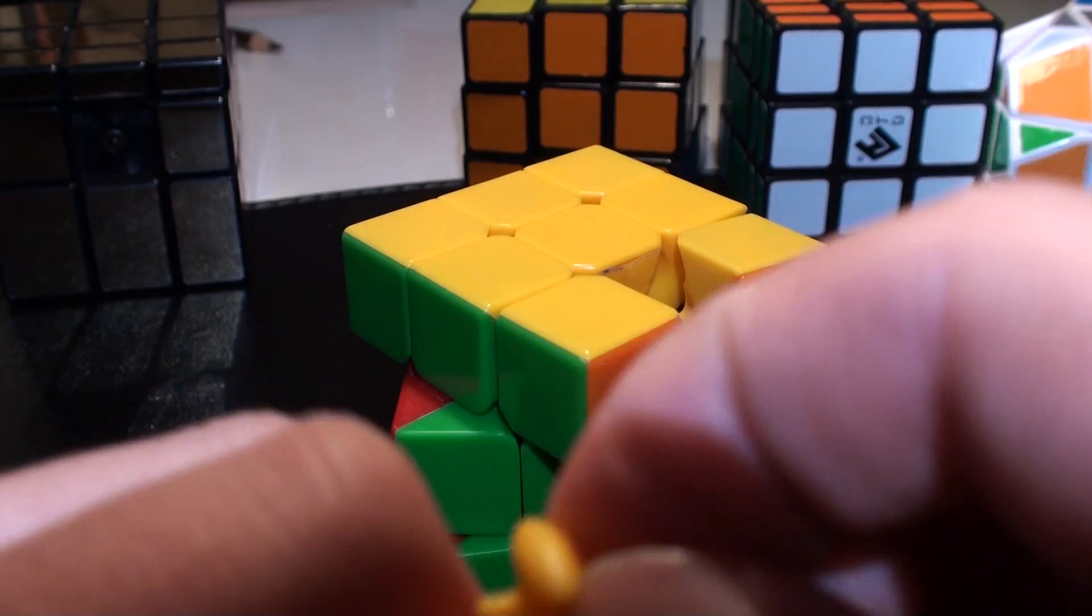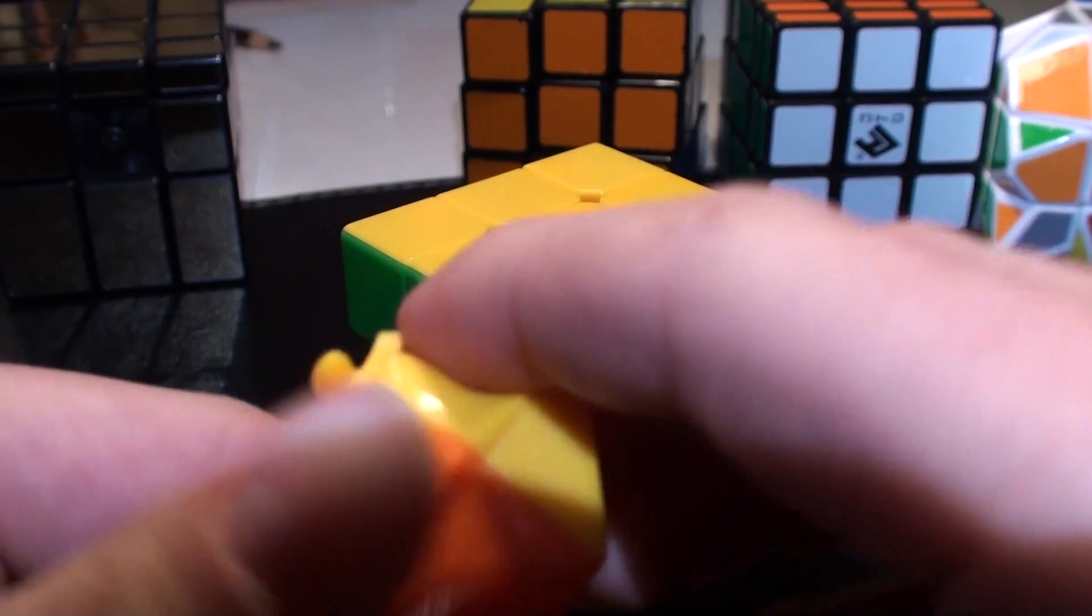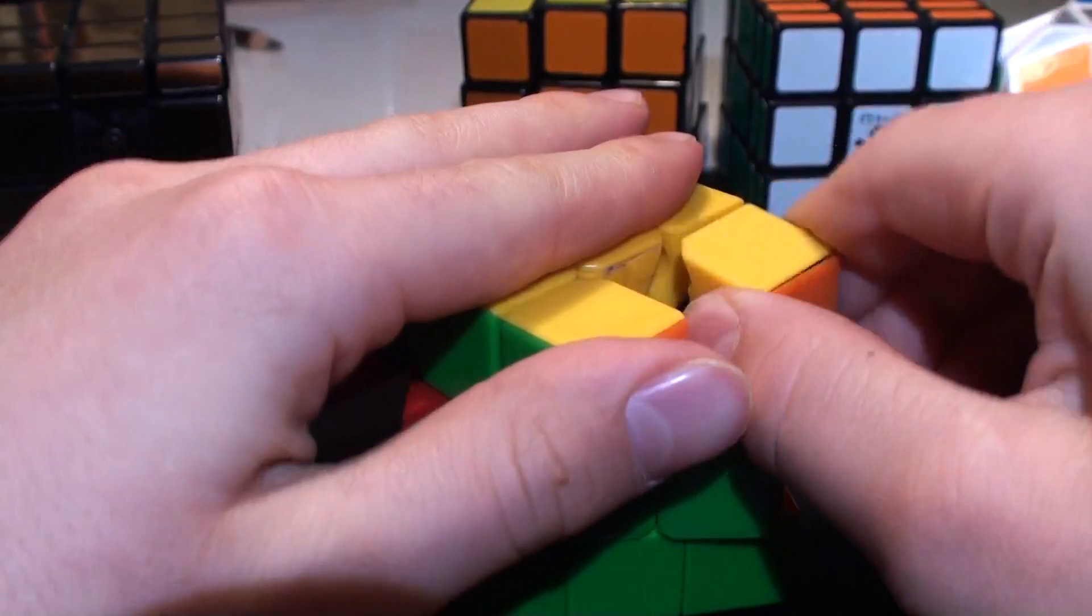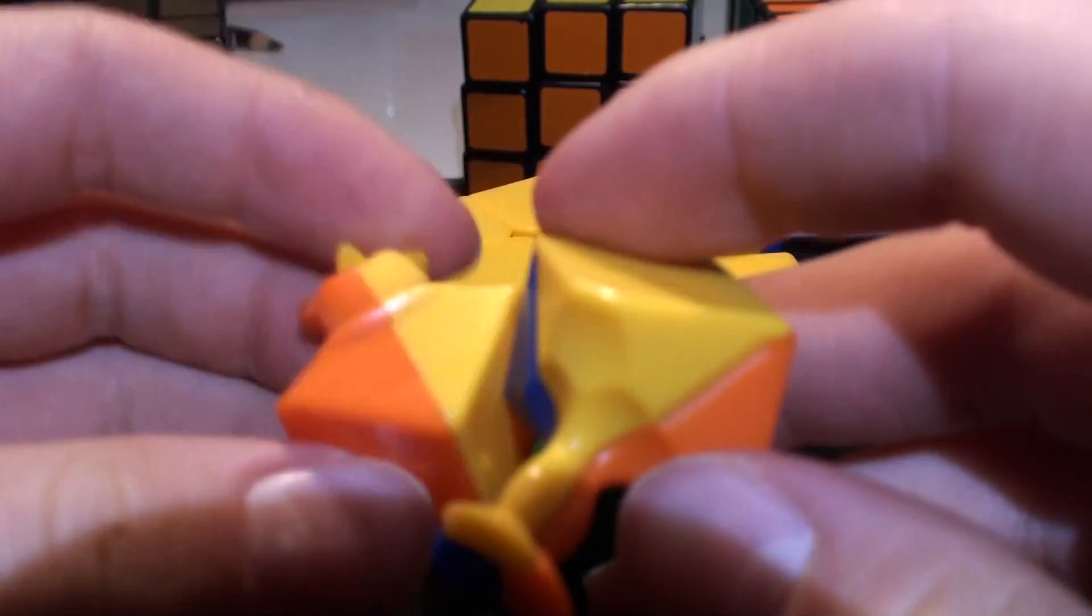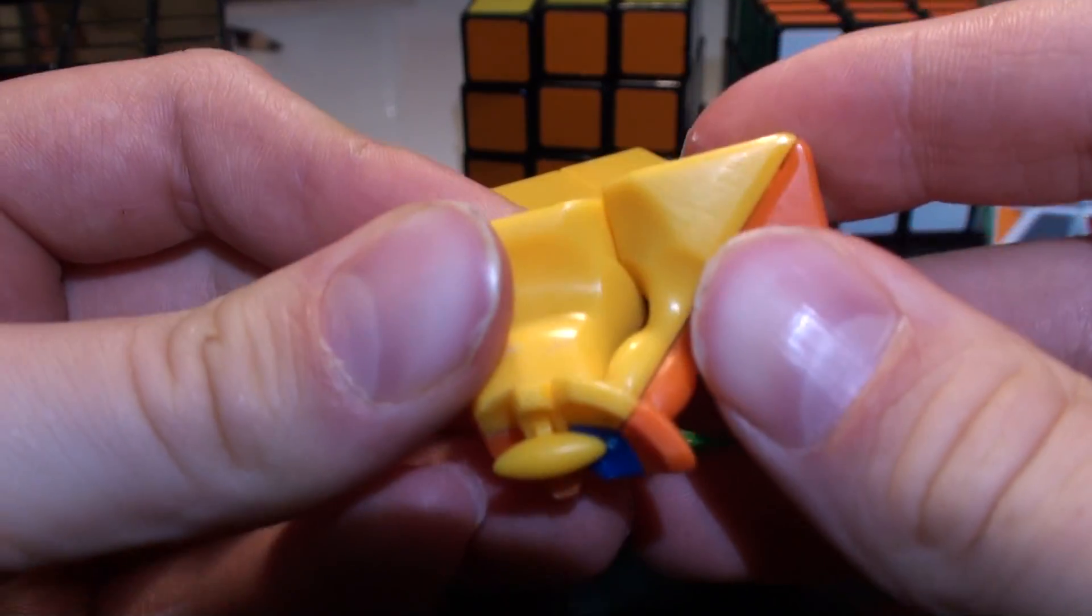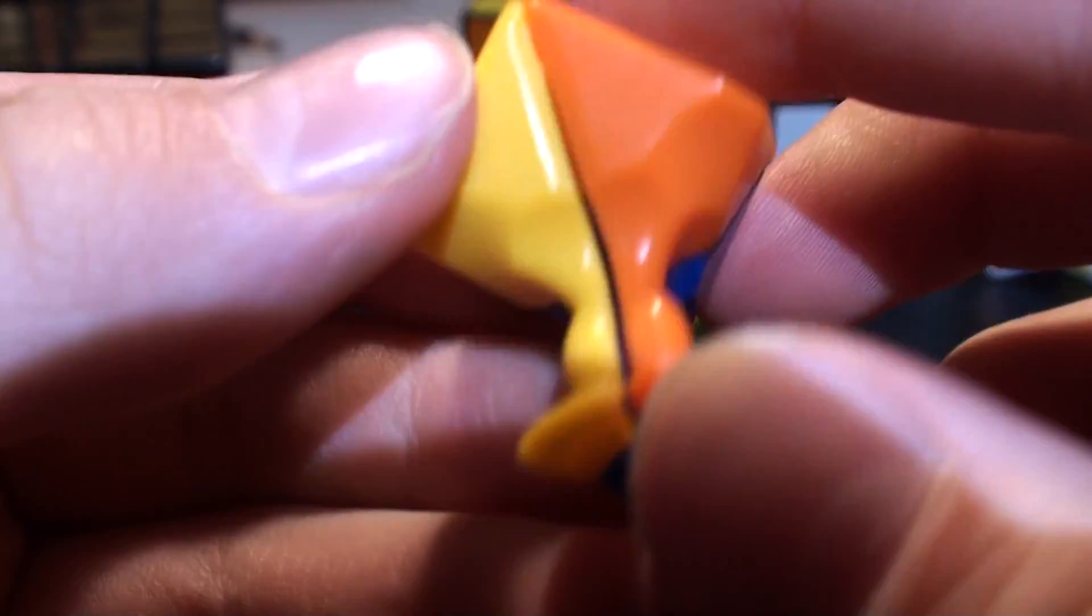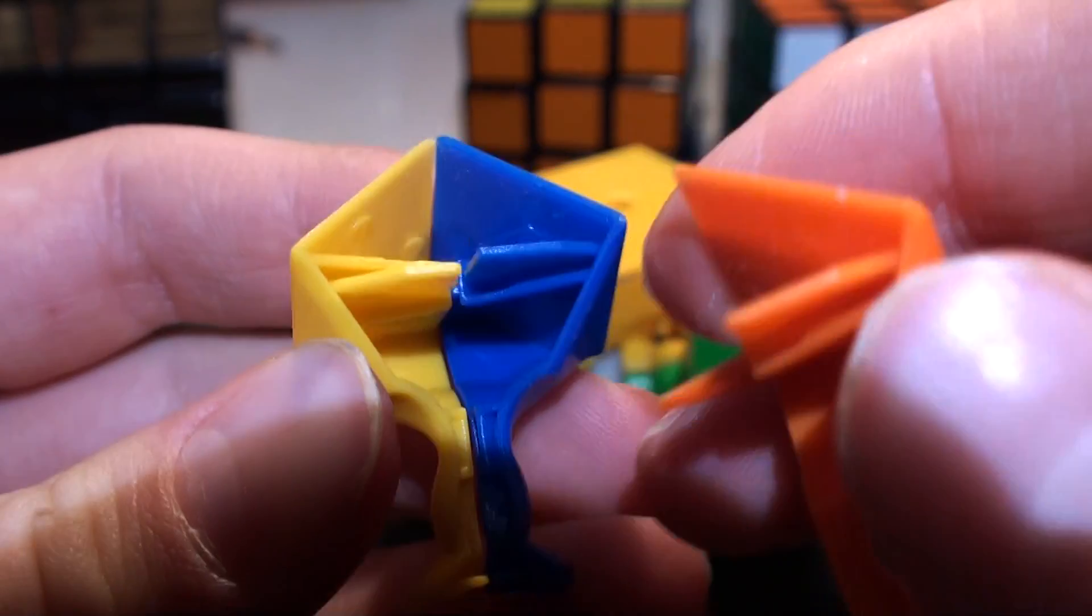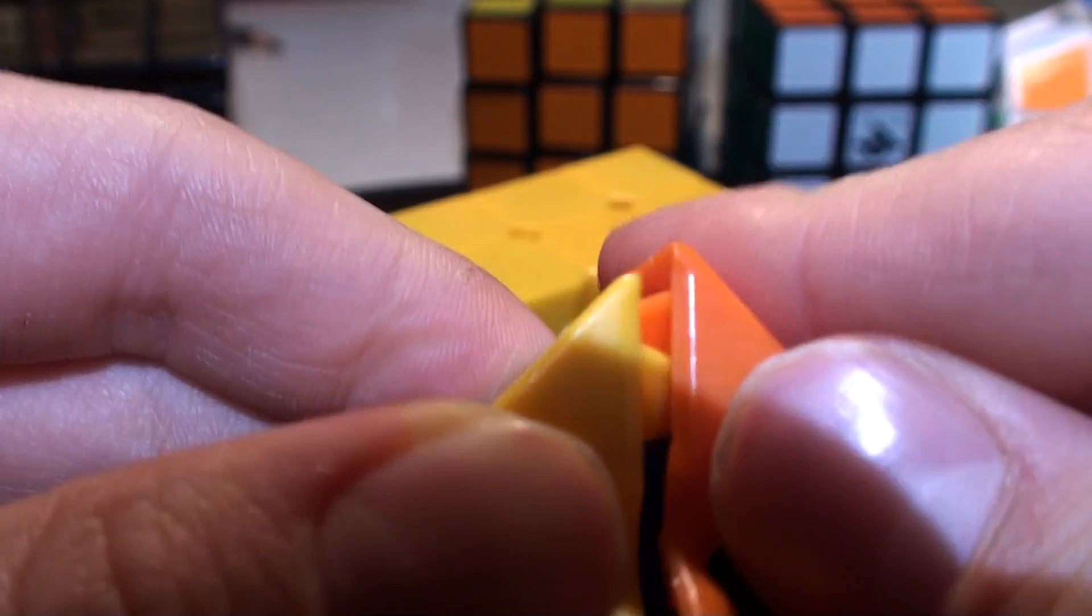That's how the edge piece looks. Now the corner looks like this. You can see when you turn it, it goes like this. Yes, it's pretty good. The corner contains three pieces, so you can see one, two, and there's a third.